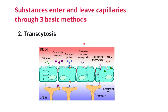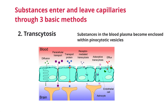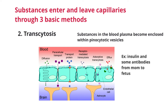In transcytosis — which includes receptor-mediated or absorptive transcytosis — substances in the blood plasma become enclosed within pinocytotic vesicles that enter endothelial cells by endocytosis and leave by exocytosis, transferring to the other side. This is important mainly for large lipid-insoluble molecules that cannot cross capillary walls any other way, such as insulin and some antibodies that pass from mother to fetus.